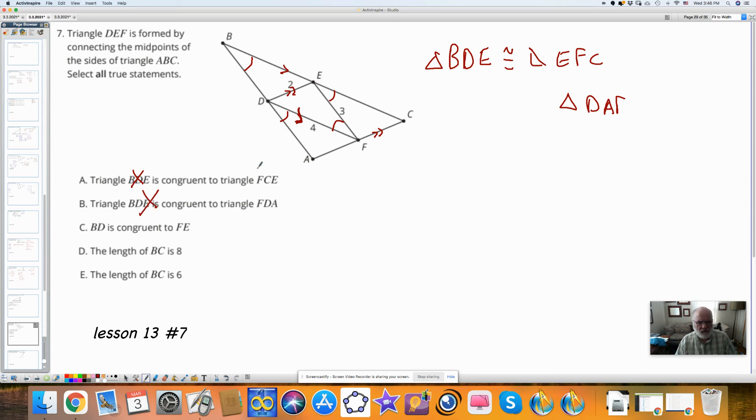BDE is congruent to FE. BDE is this distance. FE is right here. That is true. The length of the segment BC is 8. BC is going to be from here all the way across. If this is 4, this is 4, and this is 4, this would be true. Length of BC is 6. B to C is 6. That's not true. It can't be both be true.